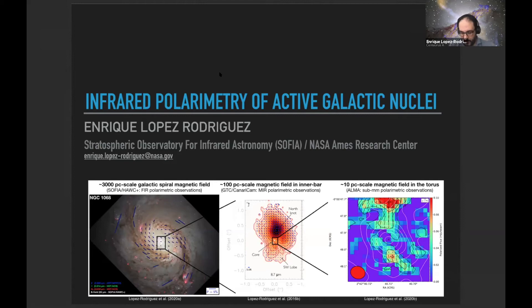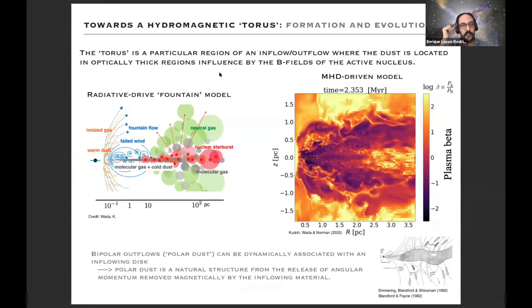Today I'm adding a little bit more fuel to the fire regarding the definition of the torus by providing another interpretation in terms of hydrodynamical models. In this case, the torus is just a particular region of inflow or outflow where the dust is located in regions that are optically thick and are influenced by the magnetic field.